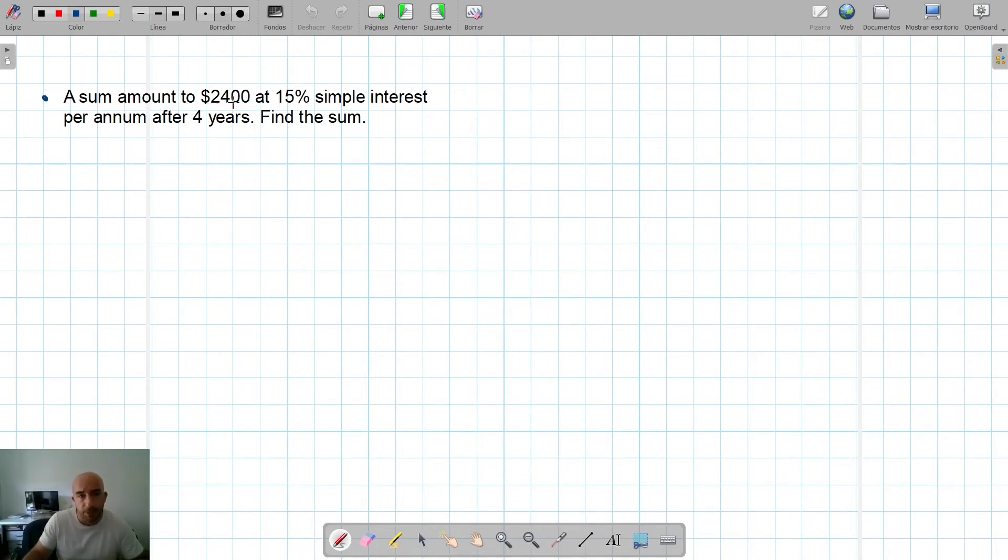Next exercise. A sum amounts to 2,400 at 15% simple interest per annum after four years, find the sum. So here we are given the final value. We're given the interest. We're given the time. And we're asked for the initial value, principal value. Again, we can't do it in the calculator because it only provides the simple interest and the final value.